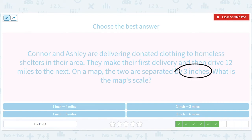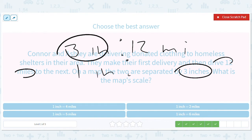Connor and Ashley are delivering donated clothing to homeless shelters in their area. They make their first delivery and then drive 12 miles to the next. On the map, the two are separated by three inches. What is the map scale? Three inches is to 12 miles. We want to know what one inch is. So we do one inch. We'd have to multiply three by four to get 12. So we're gonna have to multiply one by four to get four. So it should be one inch is four miles.